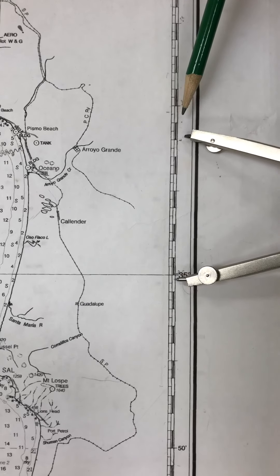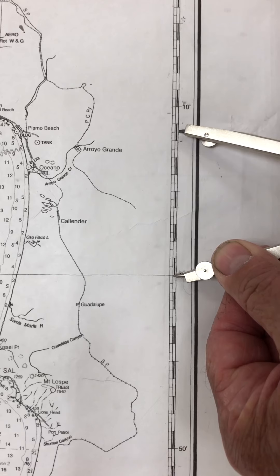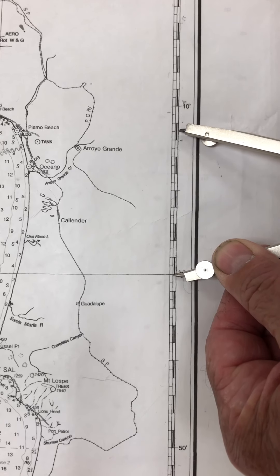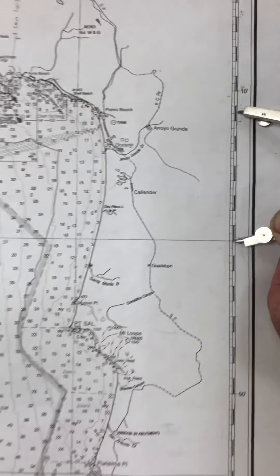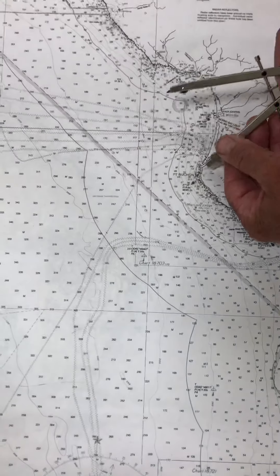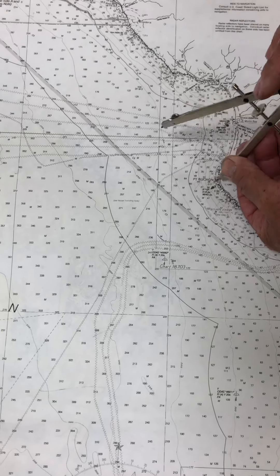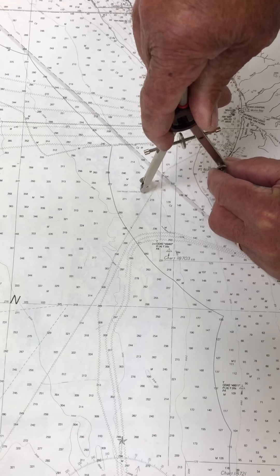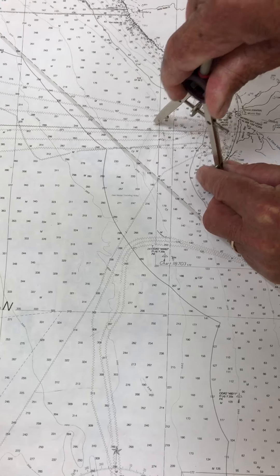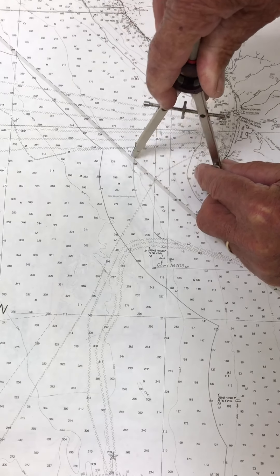You can see the divider is opened up to eight and a half minutes, which is equal to eight and a half nautical miles. Now we're going to draw a circle around Point Bouchon that shows all points that are eight and a half nautical miles from Point Bouchon.